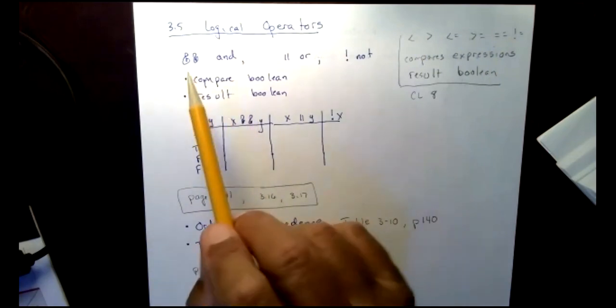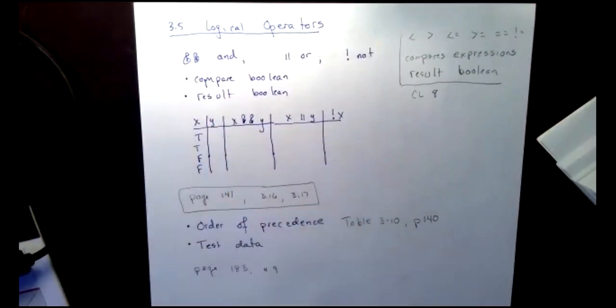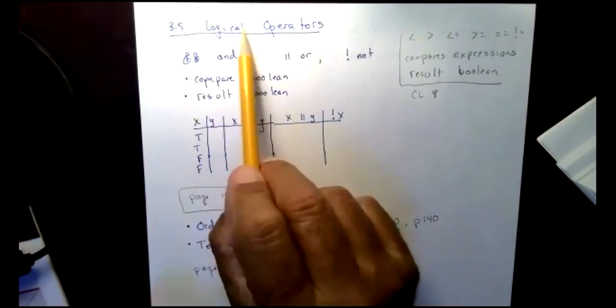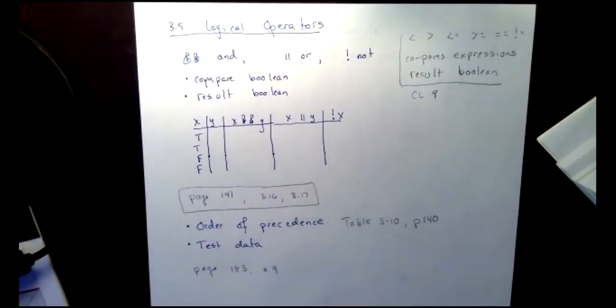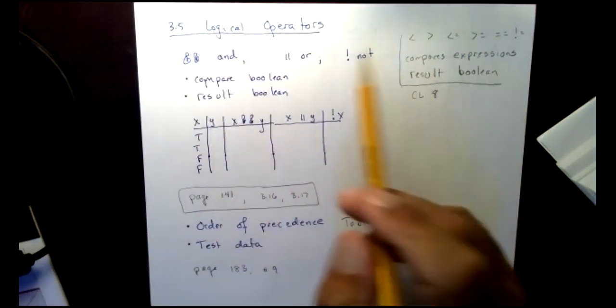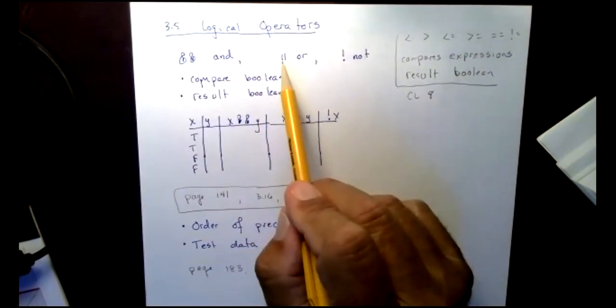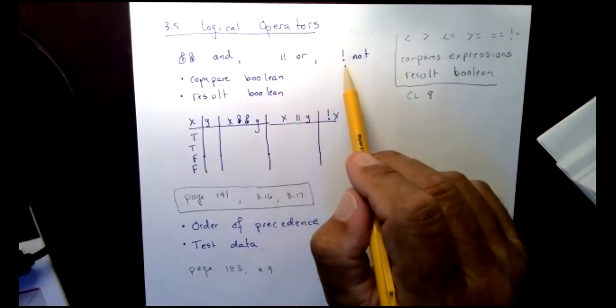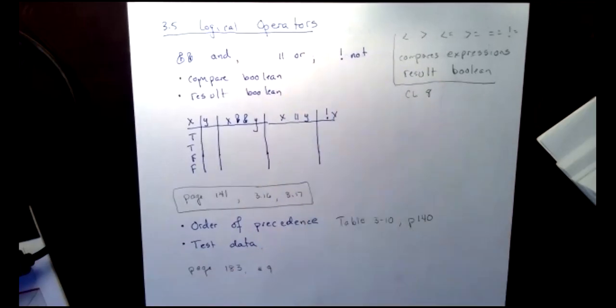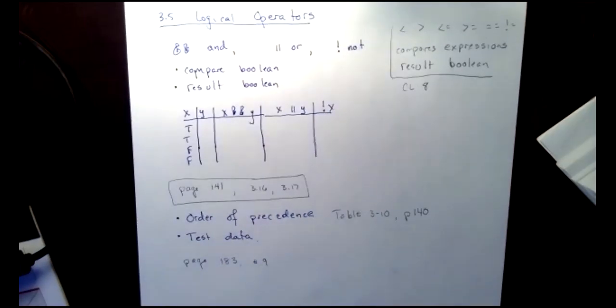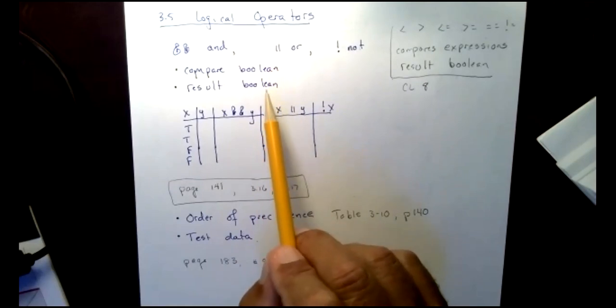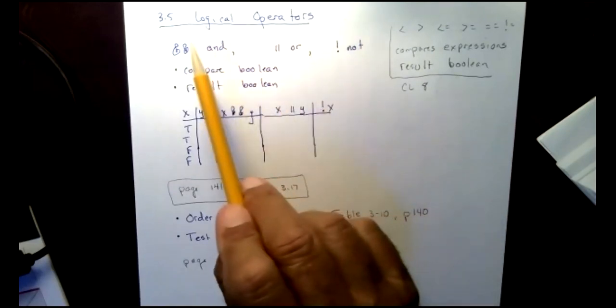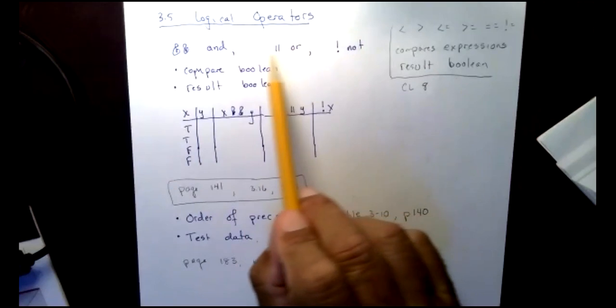Okay. And we have three of them. Of course, I'm not very good at making my freehand ampersand, but two ampersands represents the logical operator. And again, we're bringing logic into play, another area of math. And it represents and. I have the or, which is two vertical lines side by side. And then finally, I have the exclamation symbol, which represents not. What happens here? Compare boolean, result boolean. So what I just have right there is four points on your next test.